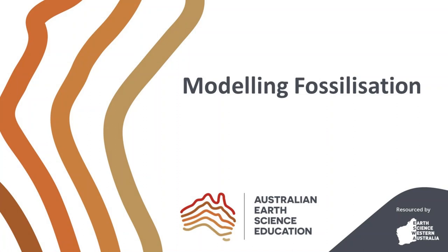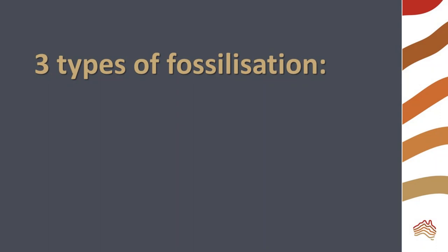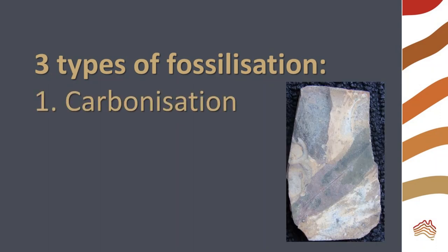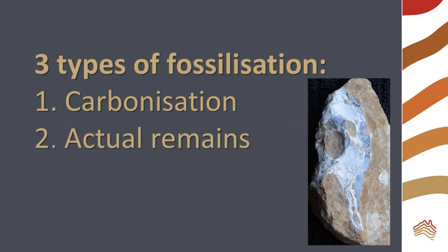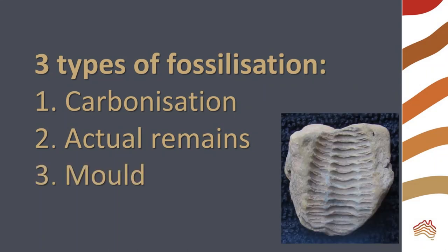Welcome to Australian Earth Science Education. In this experiment, we are going to model three types of fossilization. The first is carbonization, which is a common way for leaves to fossilize. The second is actual remains — this is what happens when an organism is buried in sediment. The third is molds, which is how an impression of an organism or footprint becomes fossilized.